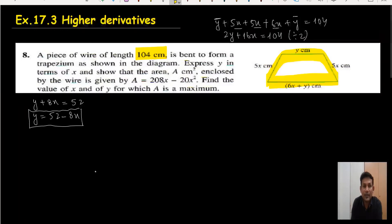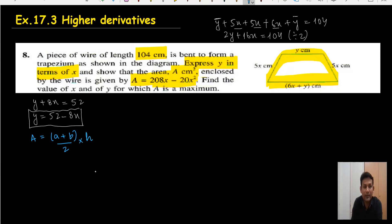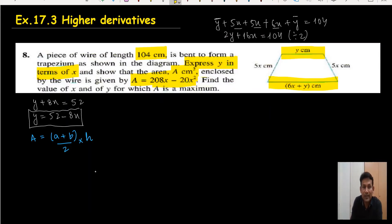Moving further, we need to show that the area equals the given expression. The area of a trapezium is the sum of parallel sides (a plus b), divided by 2, multiplied by height. The parallel sides are given, but the height is not given directly — we need to find it.